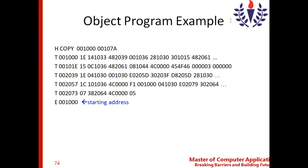This is an example of the object program. You can see the header record, text records, and end record. In the header record, the name of the program is 'copy,' the starting address is 1000, and the program length is 1078. You can see the number of text records in the object program for the corresponding source program, as well as the end record with starting address 1000.